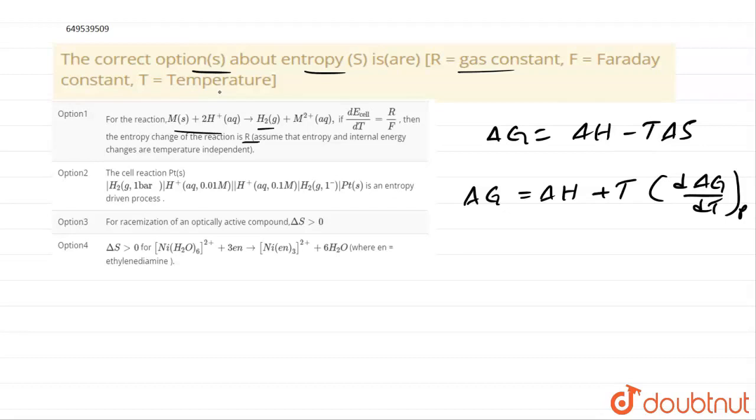According to the equation, we will write dE cell by dT equal to delta S by NF that equal to R by F what they given in the question. By this, if we compare this one, the equation they given.